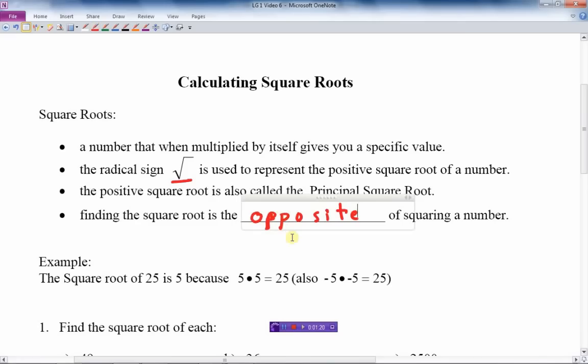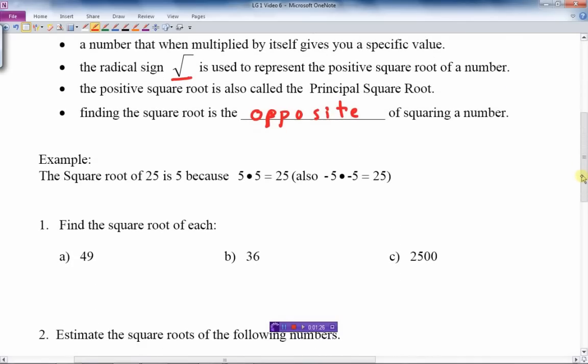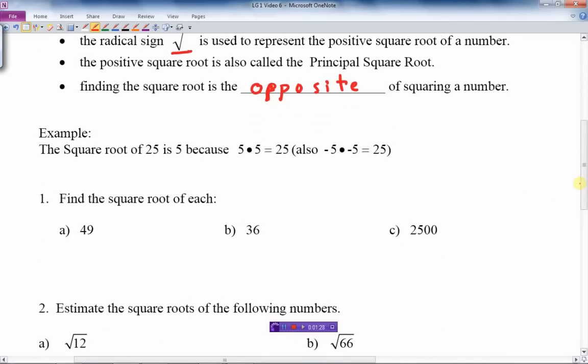So there's an example here. The square root of 25 is 5, so we could rewrite that square root symbol 25 equals 5.